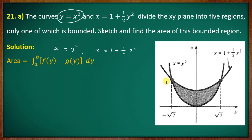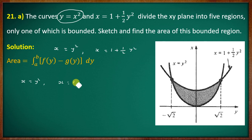Area = ∫ₐᵇ [f(y) − g(y)] dy. We find intersection points by setting 1 + ½y² = y²: this gives 1 = ½y², so y² = 2, therefore y = ±√2. So a = −√2, b = √2.